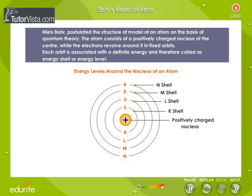These energy levels are numbered starting from the nucleus as 1, 2, 3, 4, and so on, or K, L, M, N. These integers 1, 2, 3, 4 are called the quantum number of the orbits.